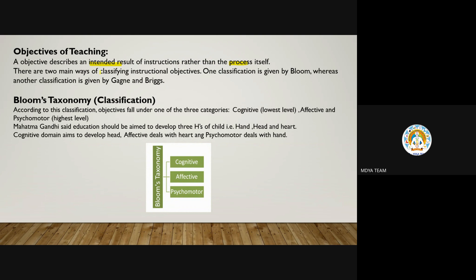There are two main ways of classifying instructional objectives. One is given by Bloom, whereas another classification is given by Gagne and Briggs. Now Bloom's taxonomy or classification — taxonomy means classification, as you see this word in biology.